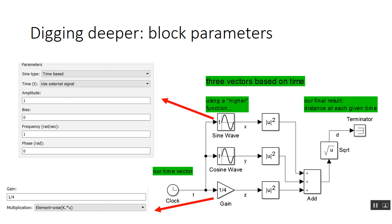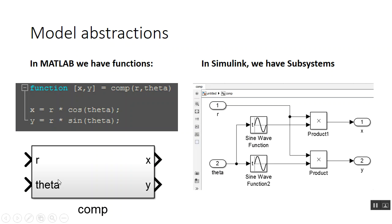Digging a little deeper — how do we configure each block? If we double-click on a block, for example the sine wave, it brings up parameter dialogs. We can set an external input port, time-based operation, amplitude of 1, bias of 0, frequency, and no phase offset. Similarly, double-clicking the gain block lets us set the gain value and multiplication method.